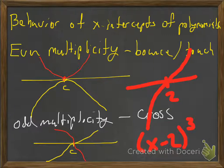So the multiplicity, even, is a bounce. Odd, it is a cross.